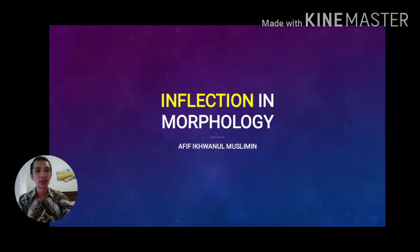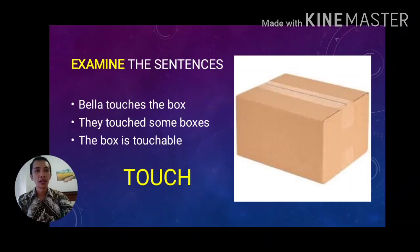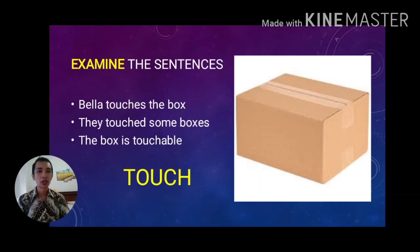Firstly, I need you to examine these three examples of sentences. First: 'Bella touches the box.' Second: 'They touched some boxes.' And third: 'The box is touchable.' What you need to do is examine which words are repeated in those three sentences. The first repeated word is the verb 'touch,' appearing in three different forms: 'touches,' 'touched,' and 'touchable.'